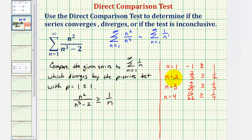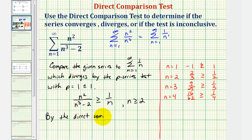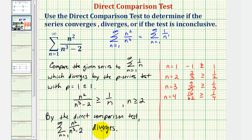So notice how it's true as long as n is greater than or equal to positive two. We'll make a special note here and say this is true when n is greater than or equal to two, which does tell us by the direct comparison test, the given series diverges. So by the direct comparison test, the given series — the summation from n equals one to infinity of n squared divided by n cubed minus two — diverges. It is important to recognize that just because it may not be true for the first one or two terms in the series, as long as when n is greater than or equal to two it is true, we can still use the direct comparison test.